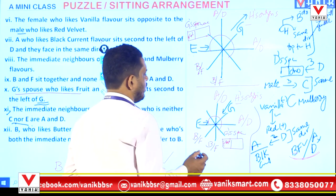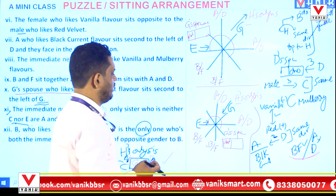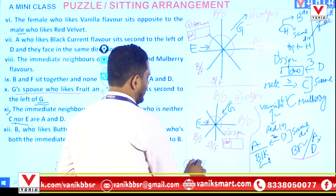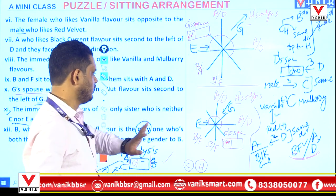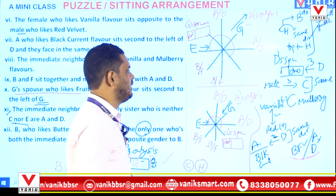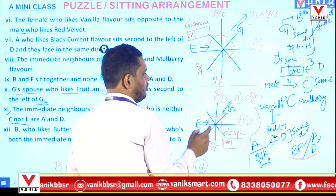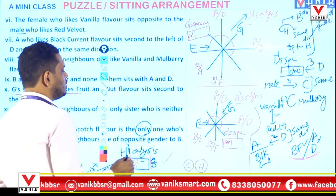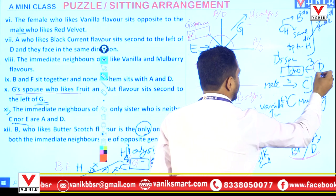The remaining persons are C and H. C hasn't been placed yet. We target C because C's two immediate neighbors should be blank — vanilla and mulberry. But if we place C at a position where one neighbor already has black currant, vanilla and mulberry can't both fit. We look for a position where both neighbor spots are free for vanilla and mulberry — C's placement is conditional on this.